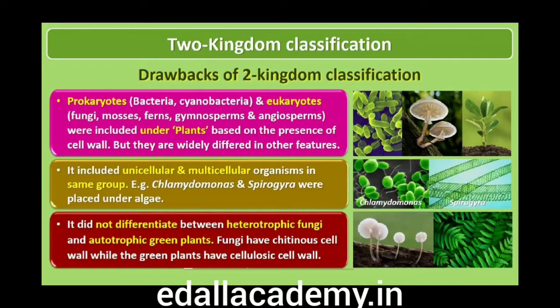A need was also felt for including, besides gross morphology, other characteristics like cell structure, nature of wall, mode of nutrition, habitat, methods of reproduction, evolutionary relationships, etc. Classification systems for living organisms have hence undergone several changes over time. Though plant and animal kingdoms have been a constant under all different systems, the understanding of which organisms be included under these kingdoms has been changing. The number and nature of other kingdoms have also been understood differently by different scientists over time.